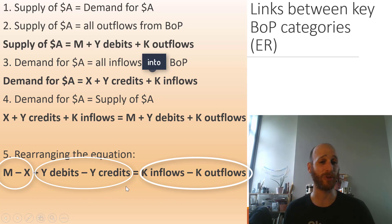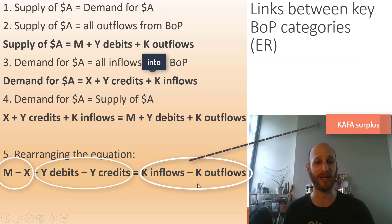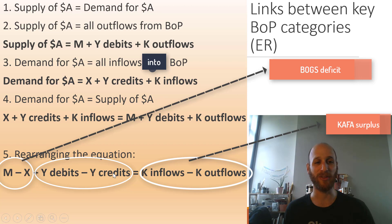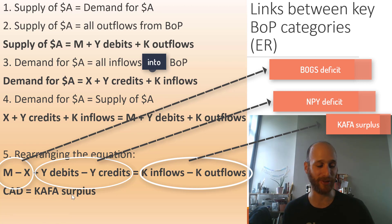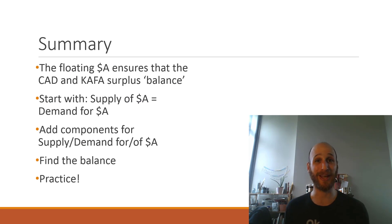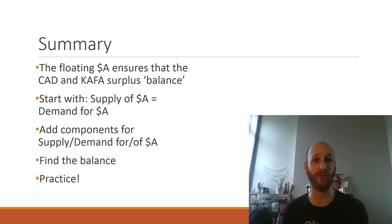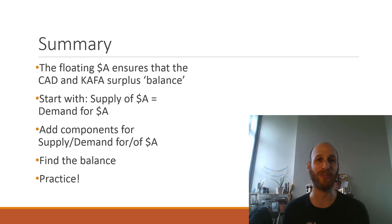This might look familiar. On the right side, capital inflows minus capital outflows is our capital and financial account surplus. On the left side, M minus X is the trade (BoG) deficit, and income debits minus income credits is the net primary income deficit — together forming the current account deficit. So the current account deficit equals the capital and financial account surplus. The floating Australian dollar ensures that the CAD and the CAFA surplus balance. Start with supply of Australian dollars equals demand, add the components, rearrange to find the balance, and practice this to get it just right.